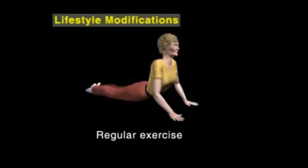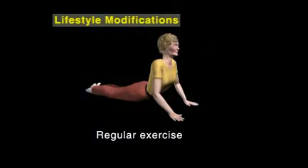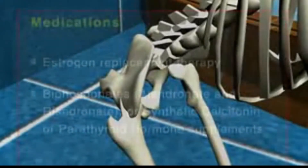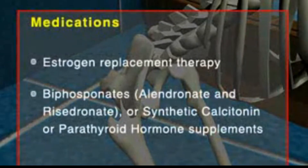Osteoporosis can be treated by changes in lifestyle, like quitting smoking, regular exercise, and a balanced diet, and by taking medications such as estrogen replacement therapy, bisphosphonates, alendronate, and risedronate.